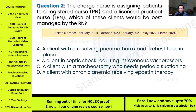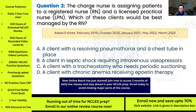Next question: The charge nurse is assigning patients to a registered nurse and a licensed practical nurse. Which of these clients would be best managed by the RN? This question has been asked five times. Options: A) client with a resolving pneumothorax and a chest tube in place; B) a client in septic shock requiring intravenous vasopressors; C) a client with a tracheostomy who needs periodic suctioning; D) a client with chronic anemia receiving epoetin therapy.